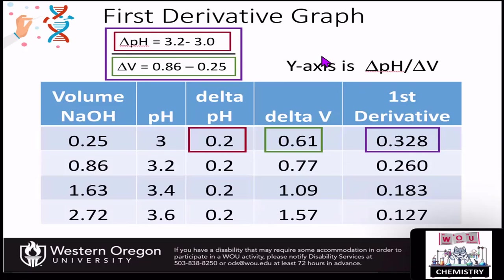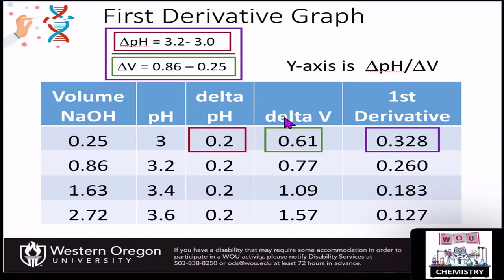To do this first derivative graph, you've got your volume of your base and you've got the pH — this is what you're using to calculate that normal graph. Our new y-axis for the first derivative needs to be the change in the pH over the change in the volume. So here we're going to set up three new columns: the first is the change in the pH, the second is the change in the volume, and then you can compute the first derivative, which is the division of those two.